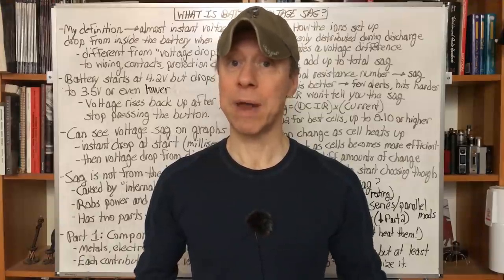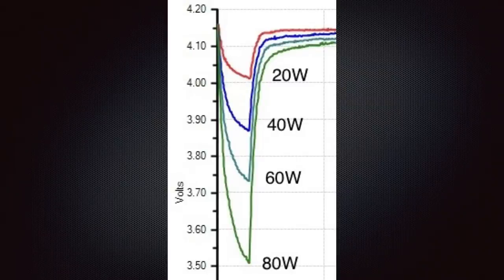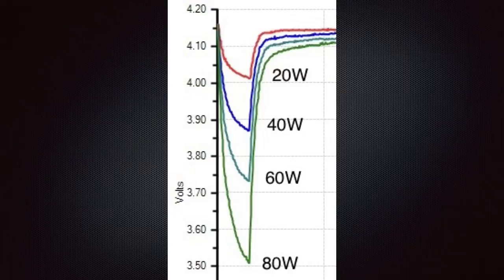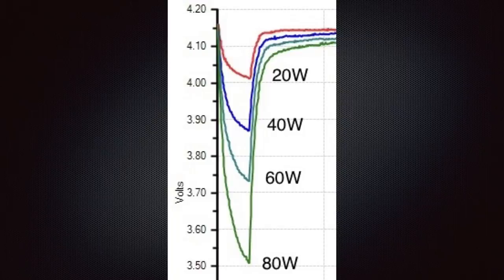This next graph shows a VTC5A discharged at 20 watts, 40 watts, 60 watts, and 80 watts. At 20 watts there's very little initial drop — most of it is the long curve for the discharge, then it snaps back up when that five-second pulse stops. At 40 watts you see more sag, it drops to a lower voltage; at 60 and 80 watts, lower and lower. Looking at just the left-hand side of the graph, you can see there's greater and greater voltage sag for higher and higher power levels.